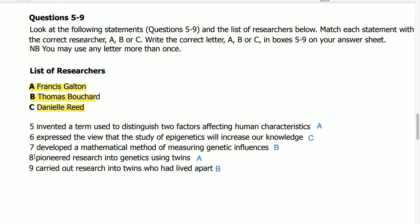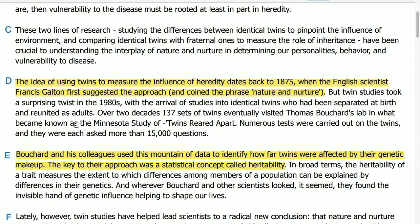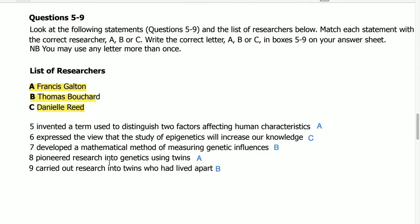Statement 8: pioneered research into genetics using twins. Its answer is in the same paragraph D, first line: the idea of using twins to measure the influence of heritability dates back to 1875, when English scientist Francis Galton first suggested the approach and coined the phrase 'nature and nurture.' So the answer for 'pioneered research into genetics using twins' is Francis Galton — answer A.